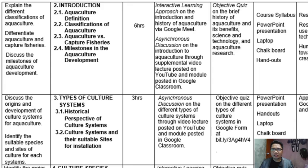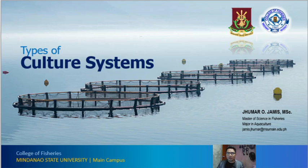Going back to our discussion, this is the second module on the types of culture systems. As an introduction: where or when did aquaculture start? Aquaculture is basically a tradition of about 4,000 years ago in China. In 1949, large-scale aquaculture began in China, specifically cultivating different carp species including the common carp, Cyprinus carpio, which was the first cultured species in China.